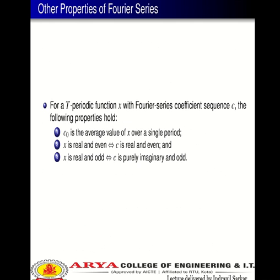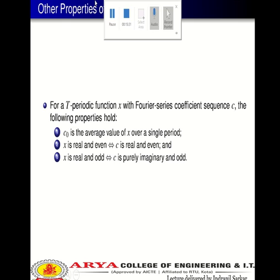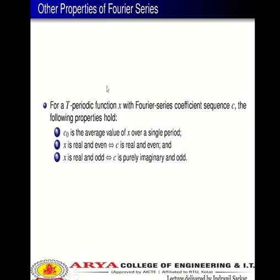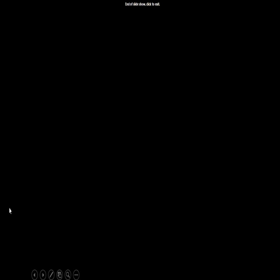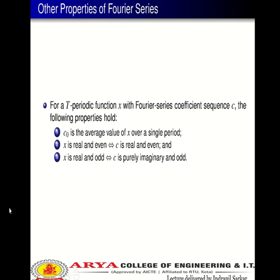Other properties of the Fourier series: For a T-periodic function X with Fourier series coefficient sequence C: (1) C₀ is the average value of X over a single period. (2) If X is real and even, then C is real and even. (3) If X is real and odd, then C is purely imaginary and odd.